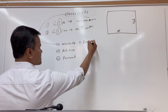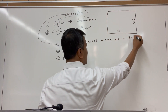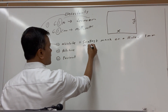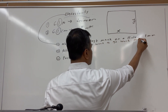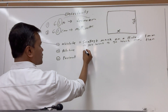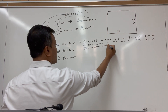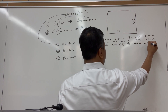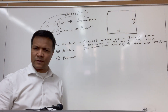Absolute uncertainty refers to the smallest mark on the ruler, which is one millimeter. If you want to go beyond the millimeter, you don't have access to that much precision. That is absolute uncertainty.